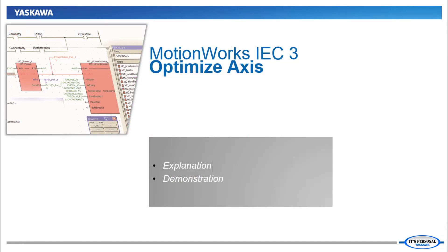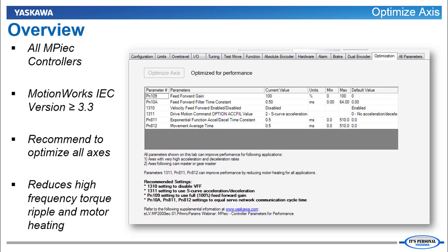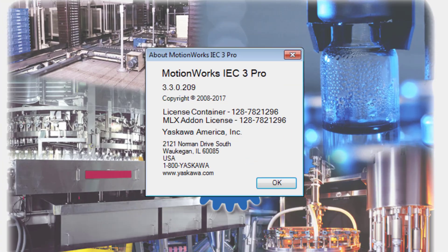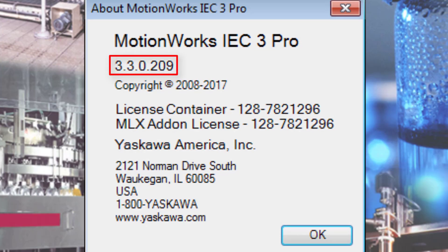Now let's look at this in more detail. Optimize Axis is available for all controllers in the MPIEC platform. The feature was introduced in MotionWorks IEC version 3.3, and I am using version 3.3.